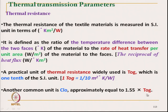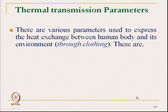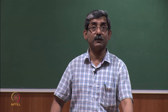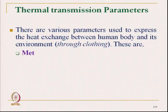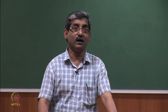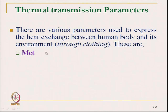There is an approximate relationship: 1.55 tog equals one CLO. We will derive this relationship. There are various parameters which can be used to express the thermal comfort through fabric thermal transmission. These include MET, CLO, and TOG. MET is widely used in human thermal comfort and comes from the term 'metabolic heat'. CLO is a term for expressing the thermal comfort of total clothing — not just a single fabric.